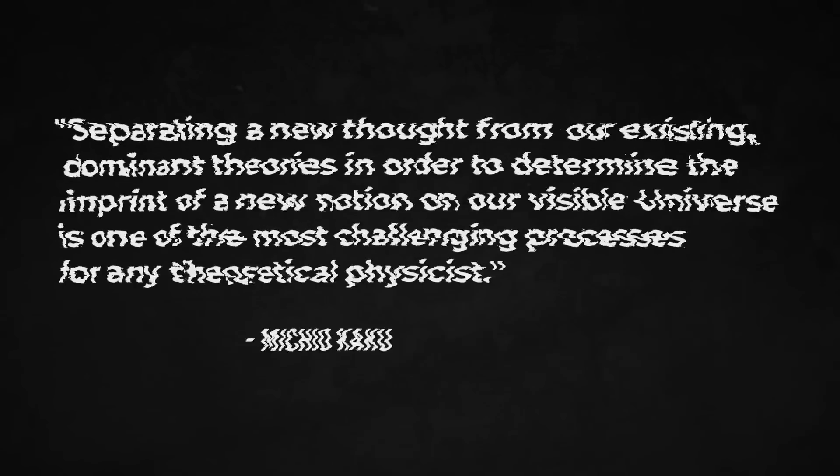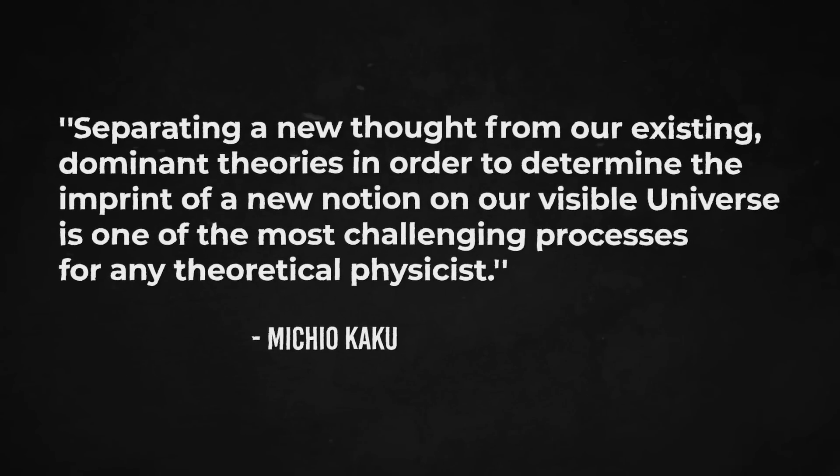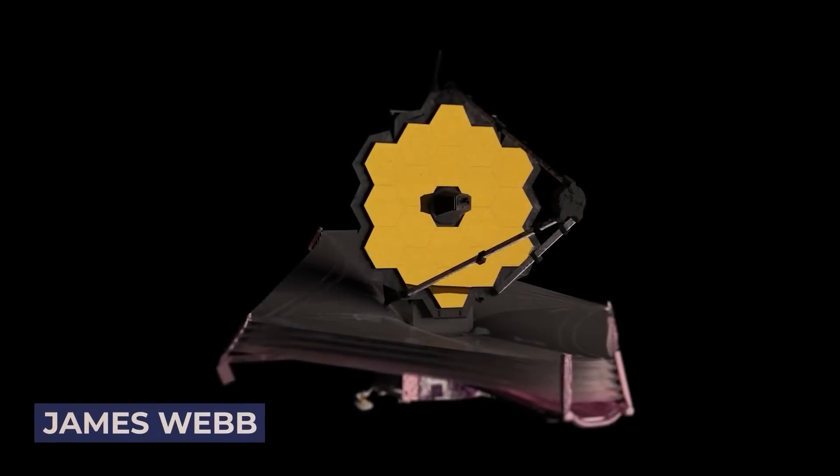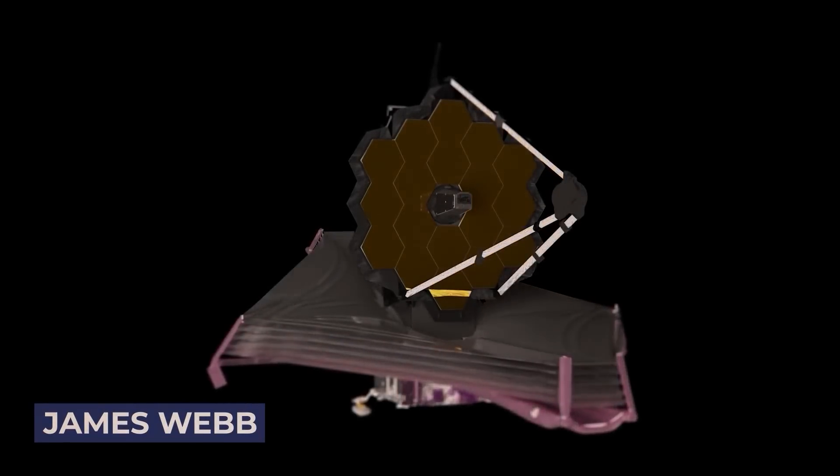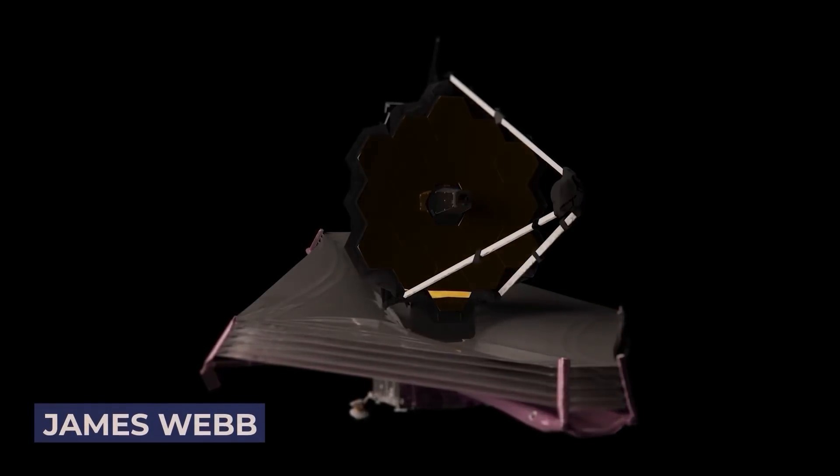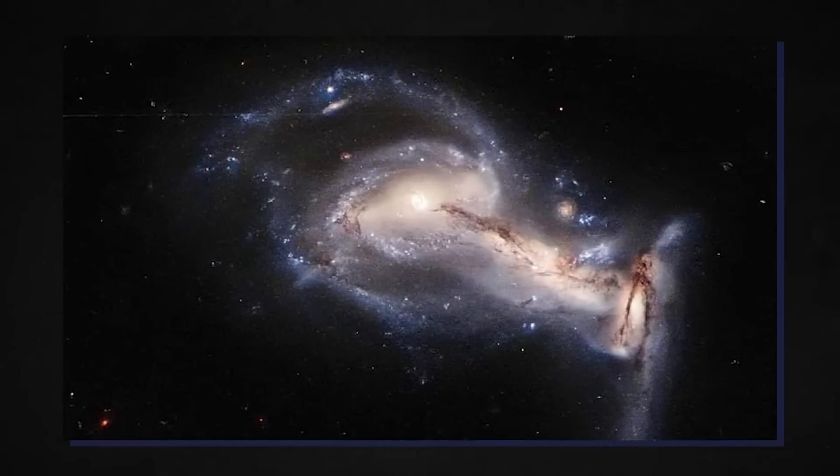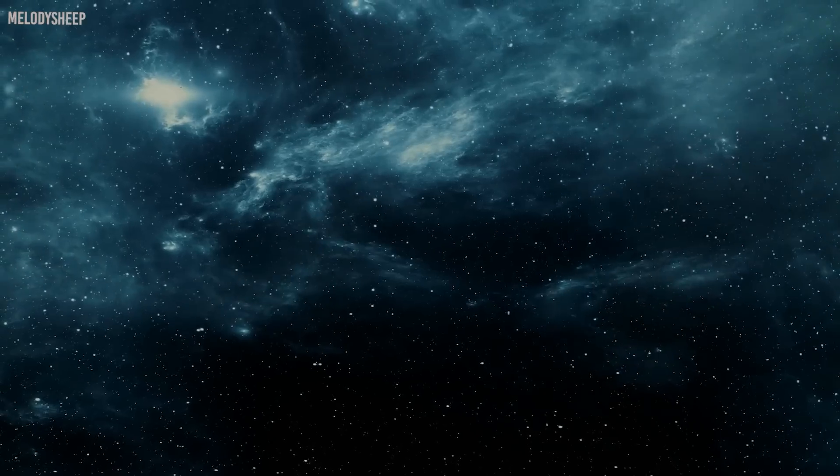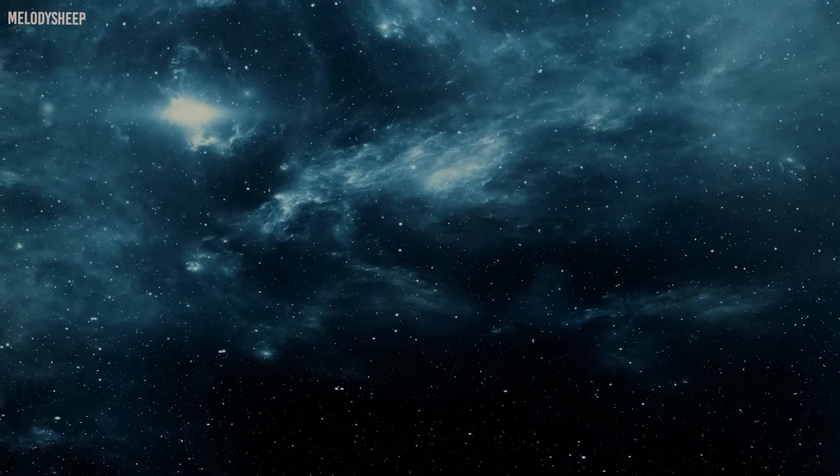According to Michio Kaku, separating a new thought from our existing dominant theories is one of the most challenging processes for any theoretical physicist. The James Webb Telescope discovered enormous galaxies and black holes that existed as early as 500 million years after the Big Bang. Michio Kaku speculates that these are massive primordial black holes that survived the Great Bang.